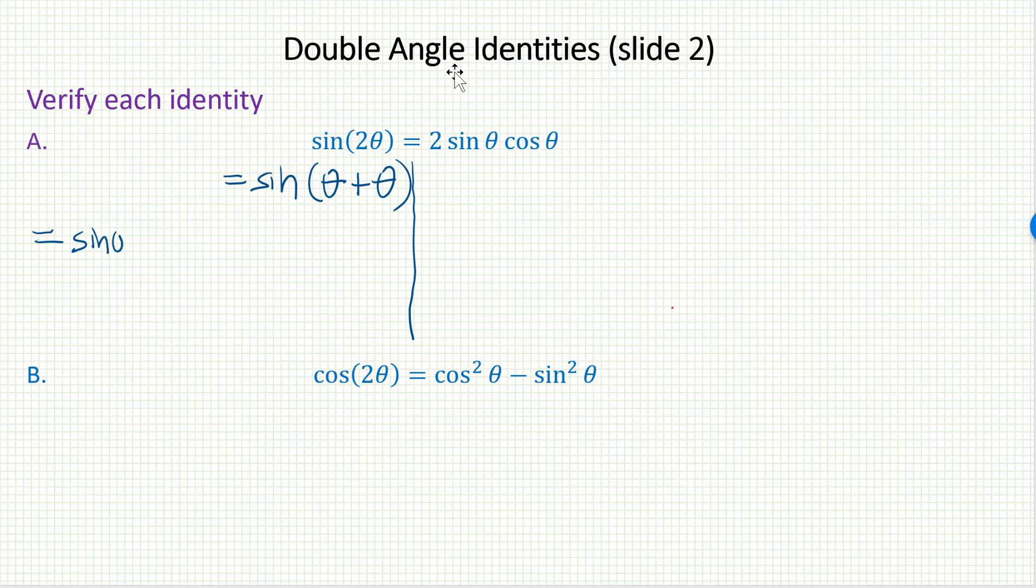The sum identity says that this is equal to the sine of the first times the cosine of the second. Of course, first and second are the same here. Plus the cosine of the first times the sine of the second. But those are like terms. Sine theta cosine theta plus another sine theta cosine theta gives me 2 sine theta cosine theta. And that's it. We're done. We've verified the double angle identity for sine.